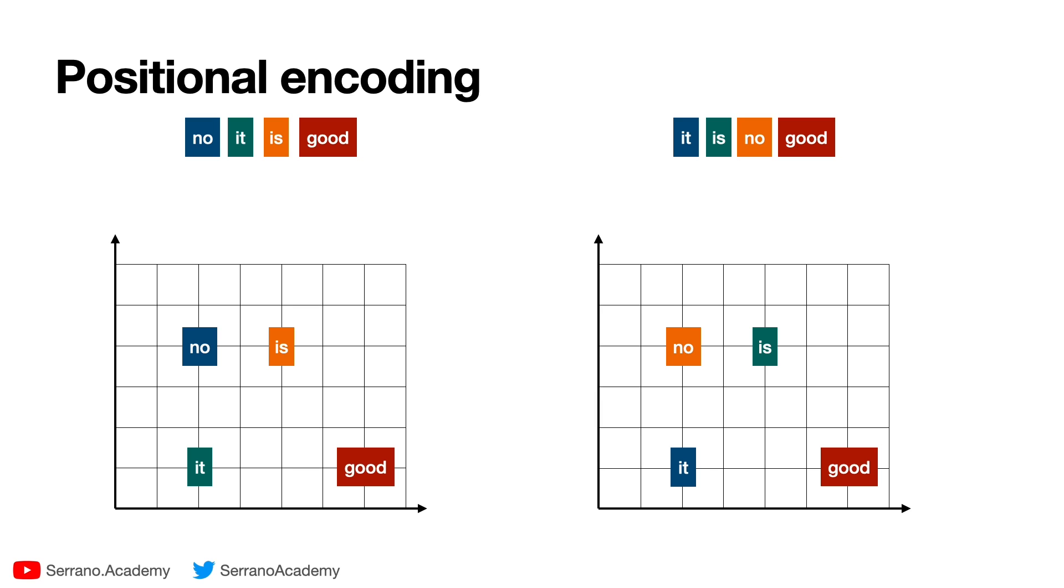Now when the transformer sees these two sentences, it sees the exact same thing because the same four points in the plane get sent to the transformer. So we need to change this and what we're going to do is something that at first looks sloppy but then it's going to make sense.